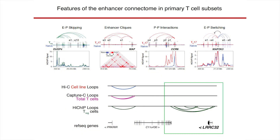We find a lot of complex interactions — about 80% of enhancer-promoter contacts fall into what we call complex interactions. These include enhancer-promoter skipping, where an enhancer skips over neighboring genes to impact a distal gene; enhancer cliques, where several enhancers work together to impact a gene; promoter-promoter interactions, where promoters act as enhancers for other genes; and enhancer-promoter switching, as shown at the MYC locus. Importantly, interactions for Treg-specific genes such as LRRC32 couldn't be found using prior methods in total CD4 T cells or cell lines — it was critical to do the assay in the cell subset we cared about.